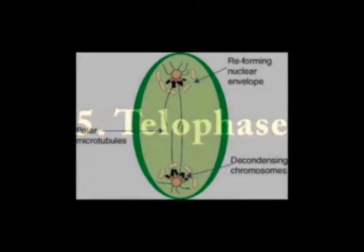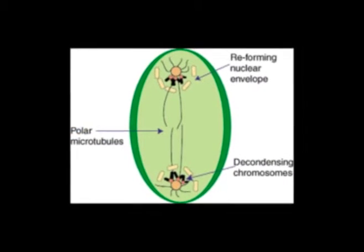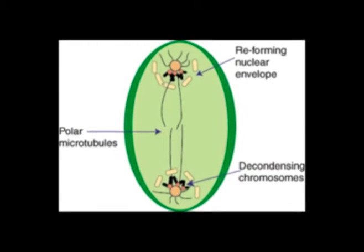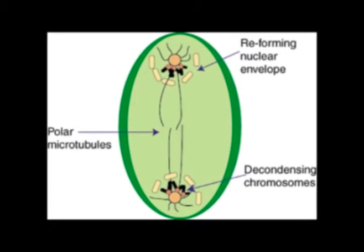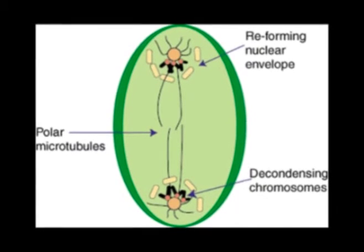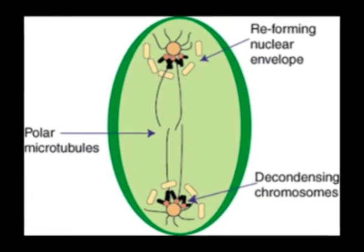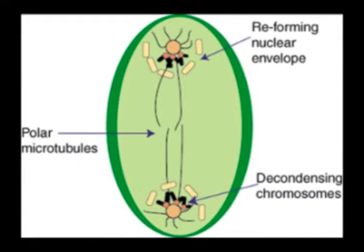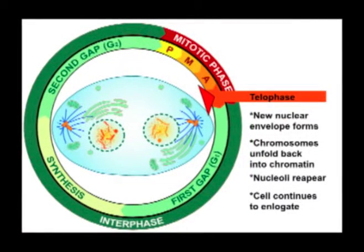Telophase: It is the final stage of mitosis. The end of the polar migration of the daughter chromosomes marks the beginning of telophase, which in turn is terminated by the reorganization of two new nuclei and their entry into the G1 phase of interphase.